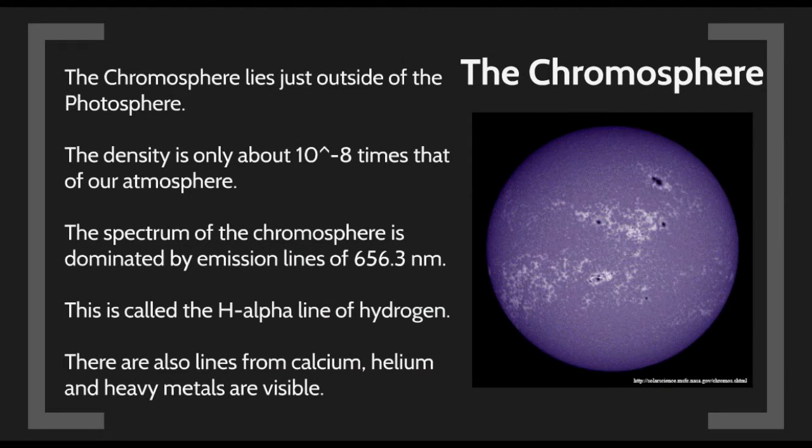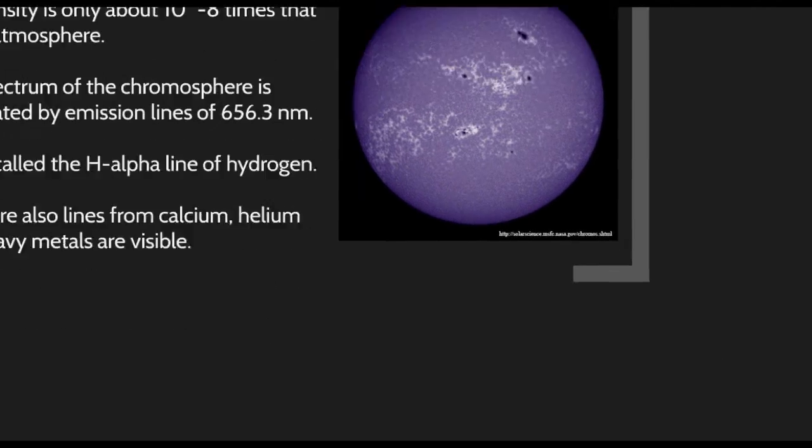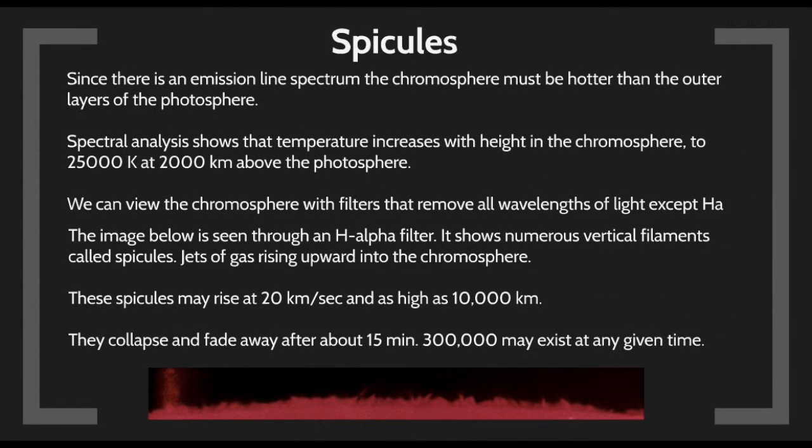Right above the photosphere, we have the chromosphere. It has a density of 10 to the minus 8 times the density of our own atmosphere. It's dominated by an emission line at 656 nanometers, the H-alpha line of hydrogen. I can also find lines from calcium, helium, and other heavy metals in the chromosphere. The temperature rises above that of the photosphere.